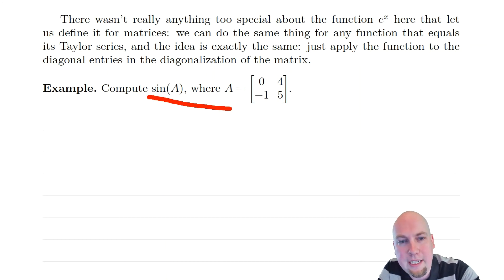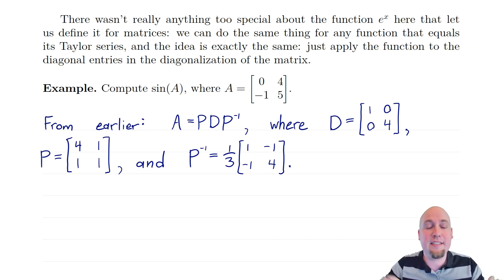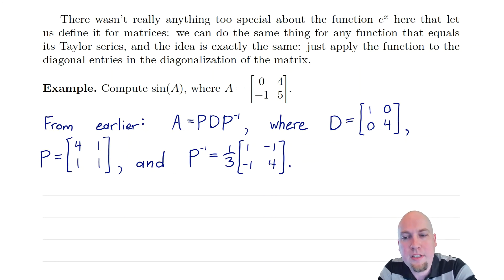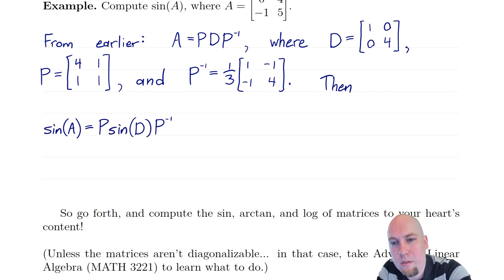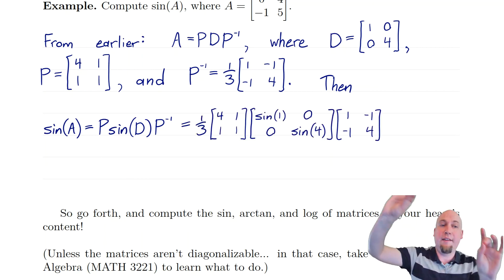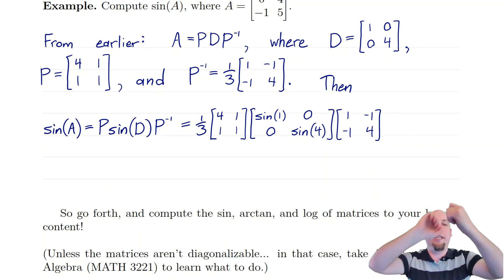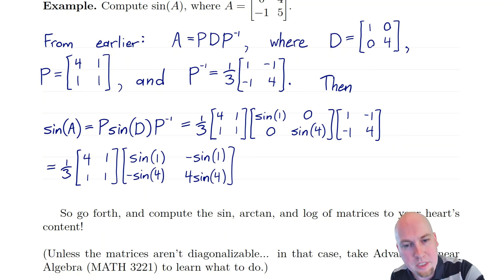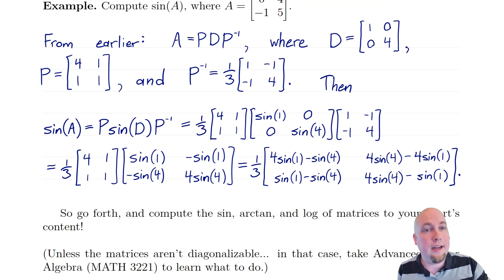For example, to compute sine of a matrix, you diagonalize it and apply sine to the diagonal piece — exactly the same procedure. Using the same diagonalization as before, sine of A is just P times sine of D times P inverse. To compute sine of that diagonal matrix, you do it entry-wise: compute sine of 1 and sine of 4, and those are your new diagonal entries. Then undiagonalize: do the right-hand matrix multiplication first, then the second matrix multiplication, and you get the final — admittedly ugly — matrix. That is what sine of matrix A is.